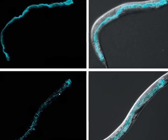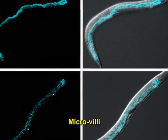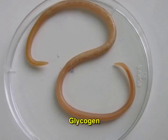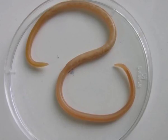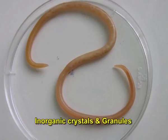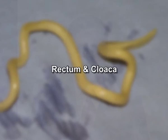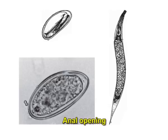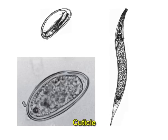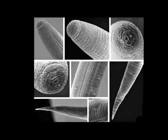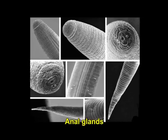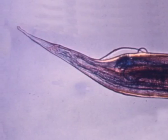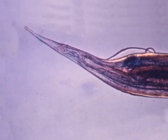The inner surface of each intestinal cell consists of microvilli. The intestinal cells often contain stored food material such as glycogen, fatty acids, and proteins, and sometimes inorganic crystals and granules are also present. In females, the rectum connects the intestine with the anal opening and is usually lined with cuticle and relatively short. In some nematode species, anal glands are found in association with the rectum. In males, the reproductive and digestive systems are joined posteriorly to form a cloaca.